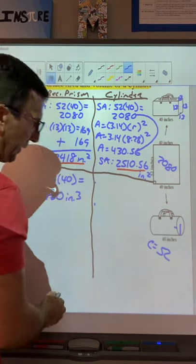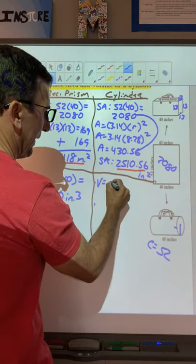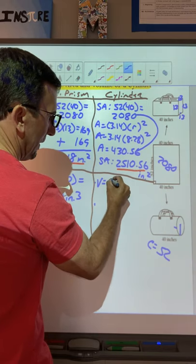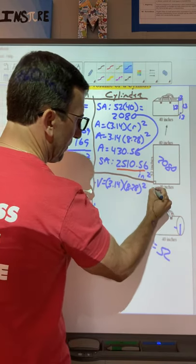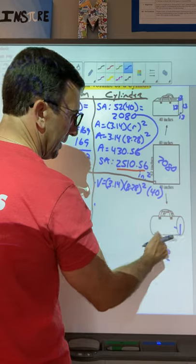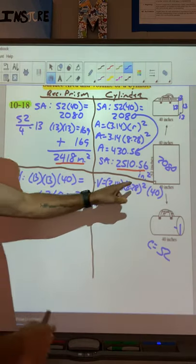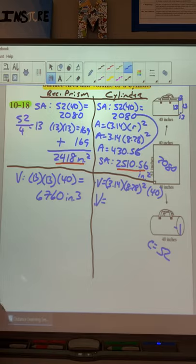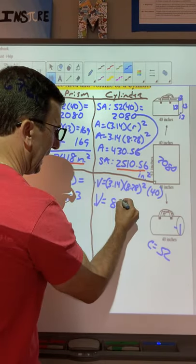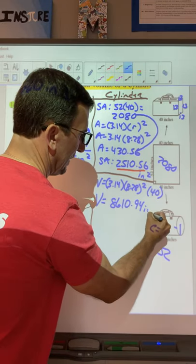Let's find the volume for this one now. So volume, I need the area of that. So remember, that area is 3.14 times 8.28 squared. And then we've got to multiply it by 40, the height. So this is my bottom. There's my height. So now you've got to do 8.28 squared. Multiply this, multiply by that. But you should have gotten 8610.94 inches cubed.